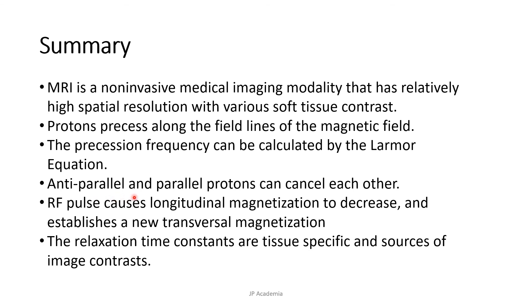Anti-parallel and parallel protons can cancel each other out. And RF pulse causes longitudinal magnetization to decrease and establishes a new transverse magnetization. Last, the relaxation time constants T1 and T2 are tissue specific and sources of image contrast for an MRI image.